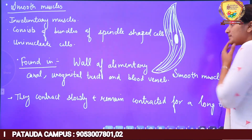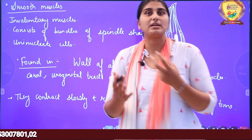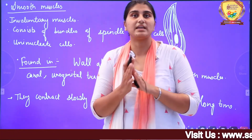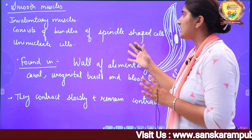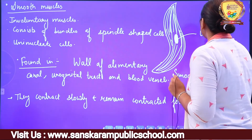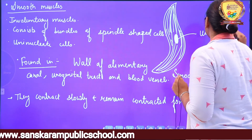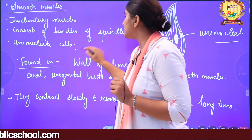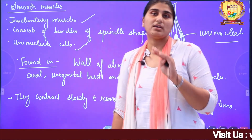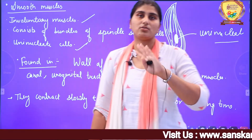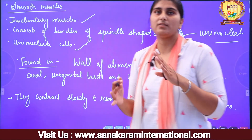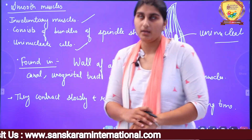Coming to the next type: smooth muscles. The word 'smooth' tells us about their appearance — there are no striations or bands on these muscles. They are smooth in appearance. These cells are uninucleate — a single nucleus is present at the center. Smooth muscles are involuntary muscles, meaning they are not under our control; they do not act according to our will. For example, when you are in sunlight, your eye's pupil becomes smaller so that less light enters and less light hits the retina.